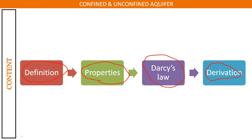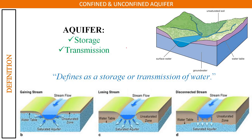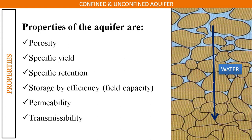So what is an aquifer? An aquifer can be defined as a medium which stores water as well as transmits the water. So the storage or transmission of water is known as an aquifer.